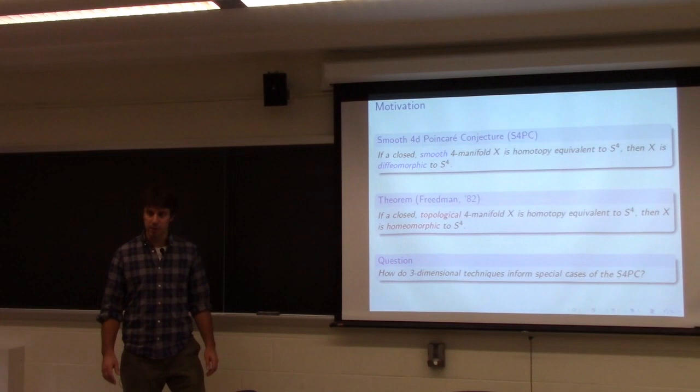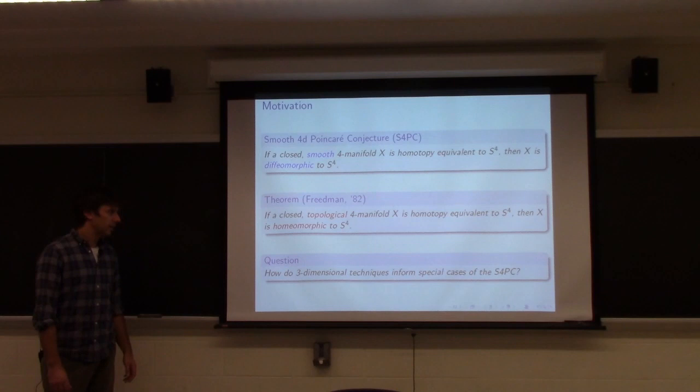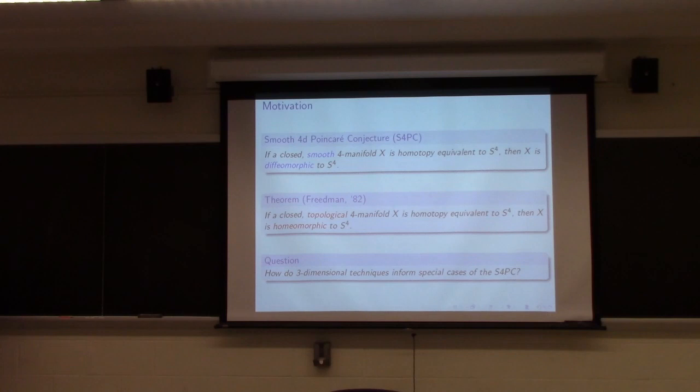This question has been asked in different categories and different dimensions over many years, and has basically been solved in every category except for the smooth category in dimension four. It's the last gasp of the generalized Poincaré conjecture. I'm a three-dimensional topologist dabbling in four-dimensional topology, and my inroad is: how can I use three-dimensional techniques to think about special cases?